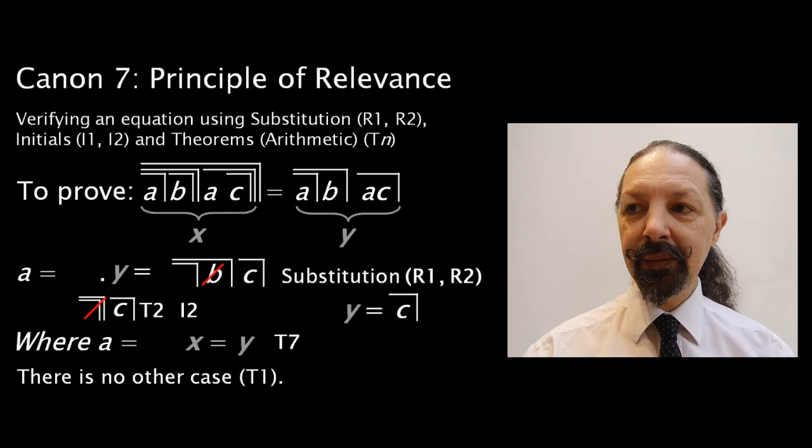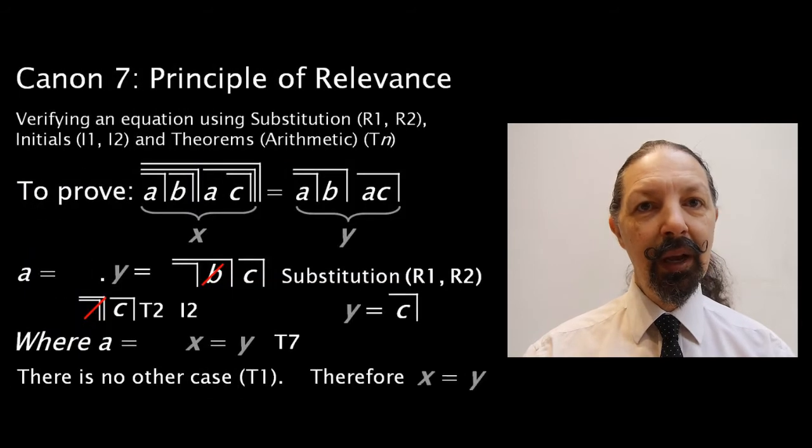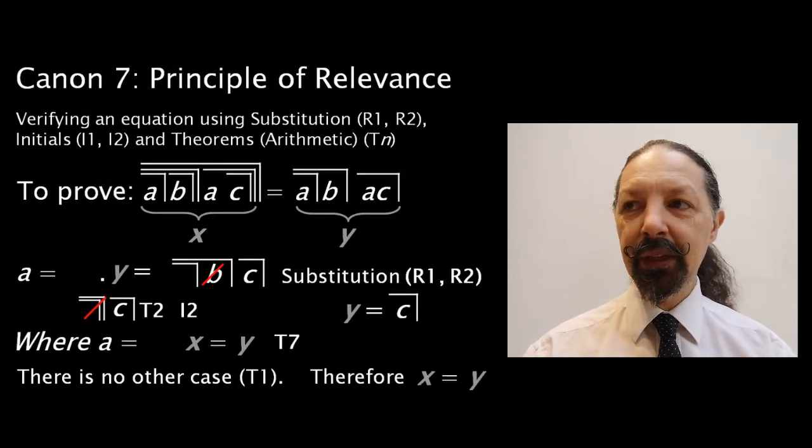No other case. There are only two options that are possible. And those are the only options. So X equals Y. And that's a proof using only the arithmetic.